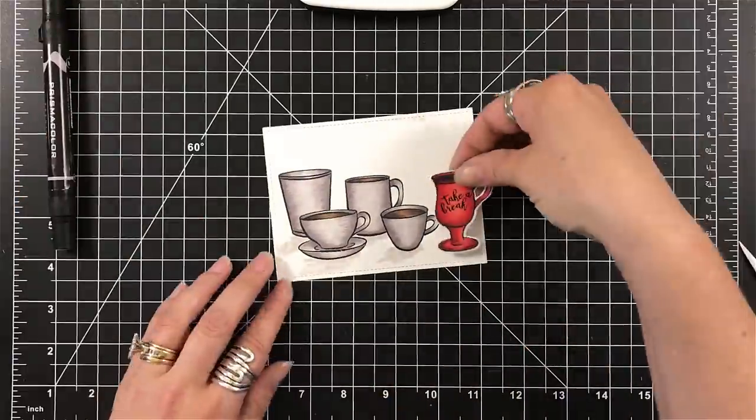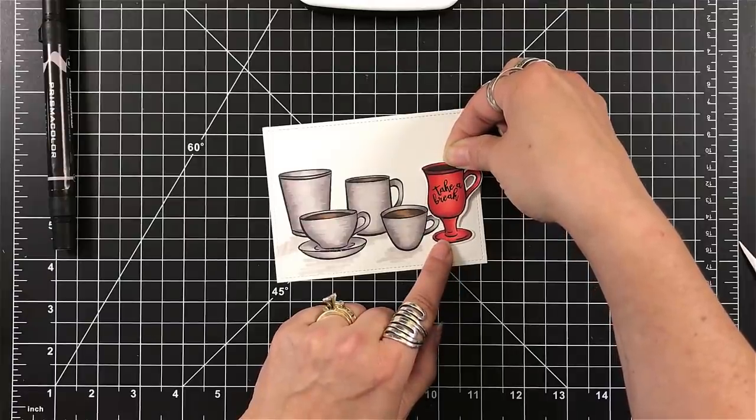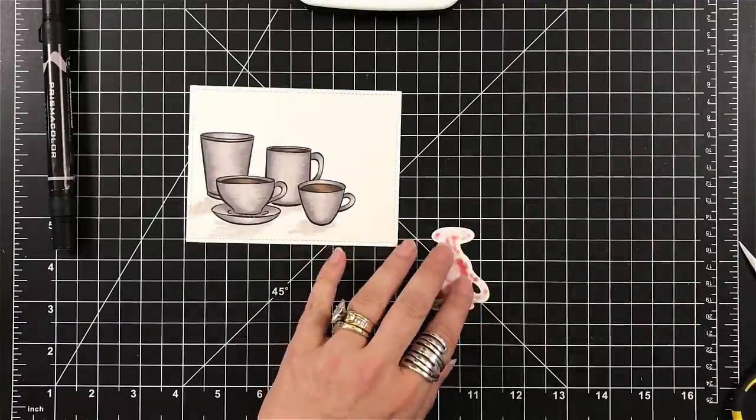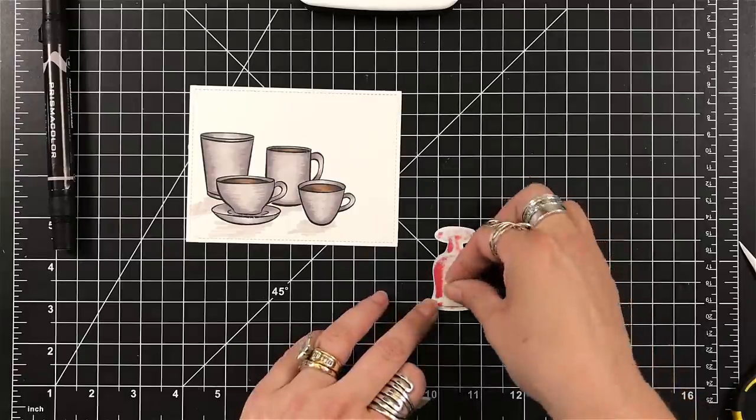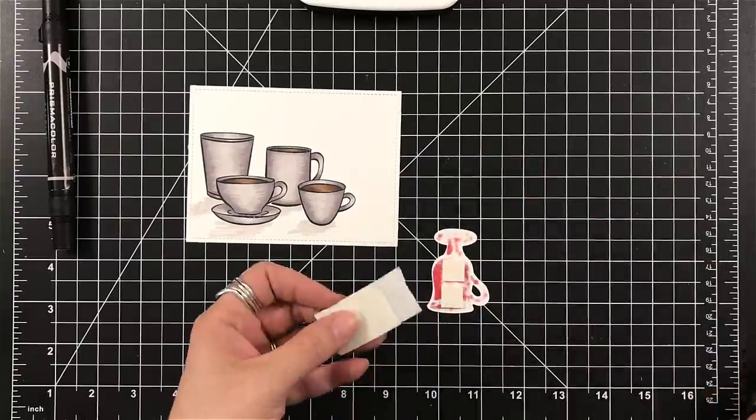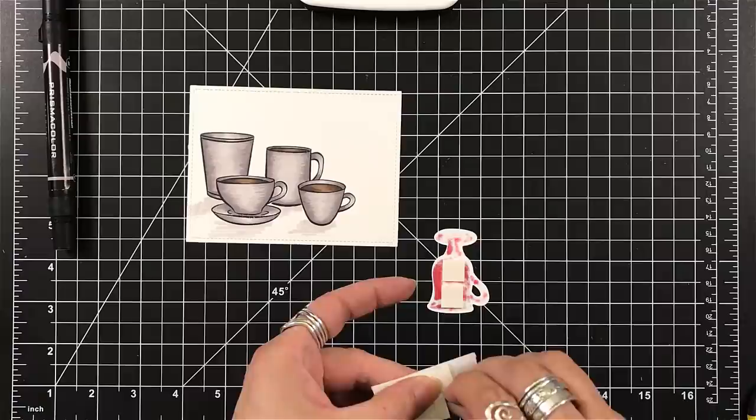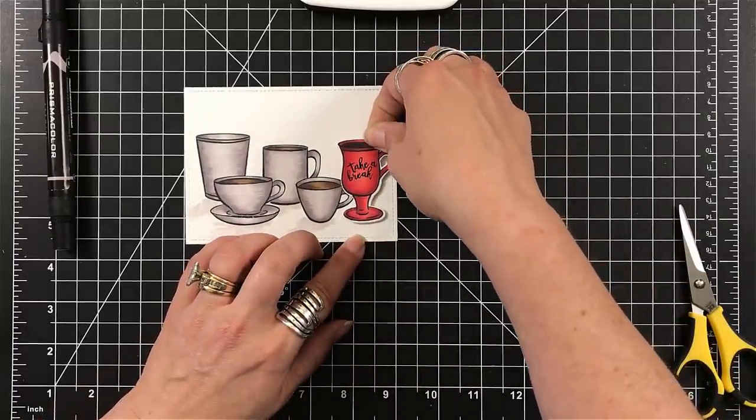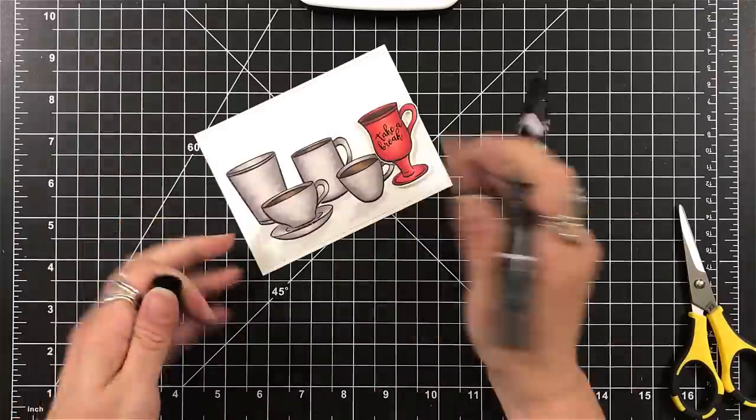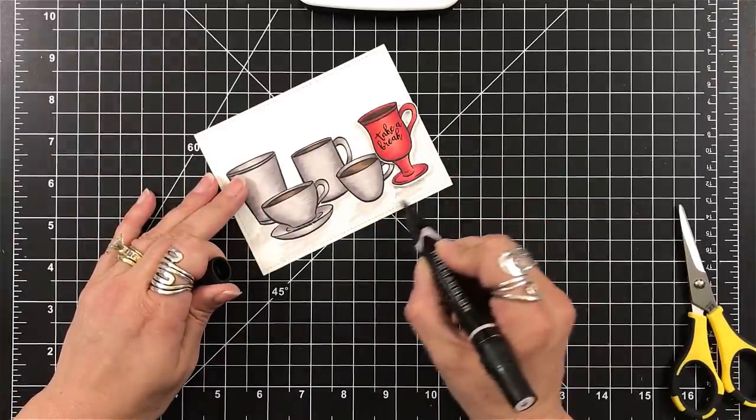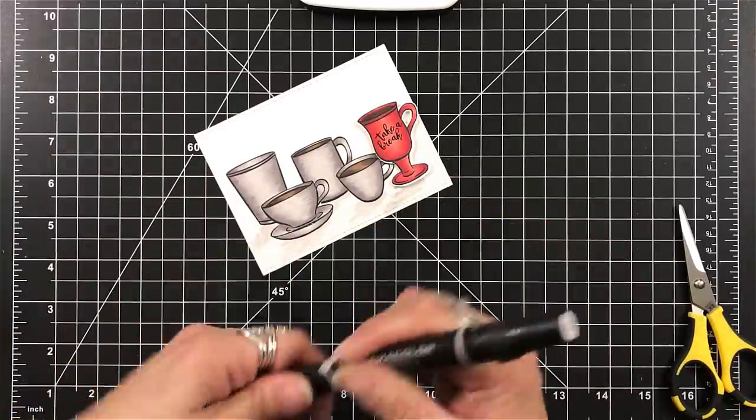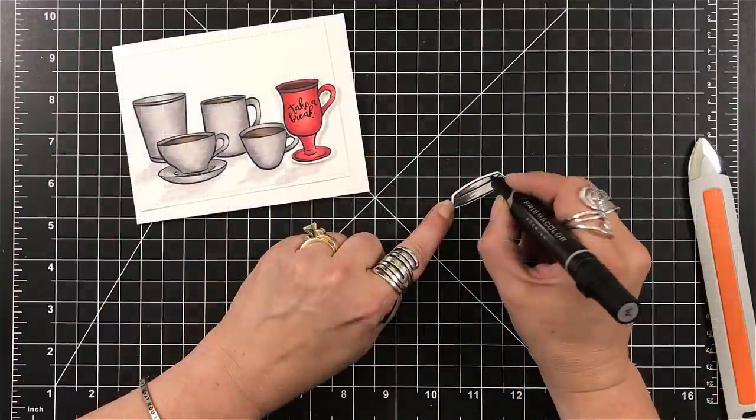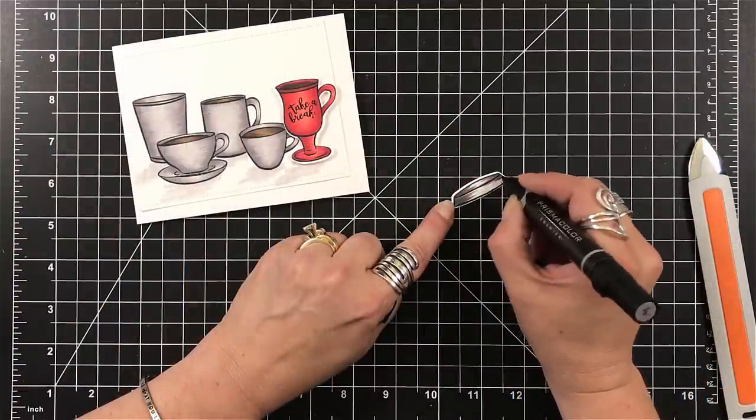So you can see the rest of the mugs are done in the grays. I've looked back at my videos and there is always one card that's black and white with a pop of color. And this is definitely it. So I've also added some grays coming off of those cups just to ground them so that now they're not floating. Just that little bit helps to ground.